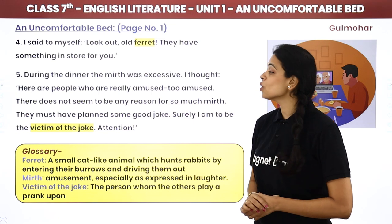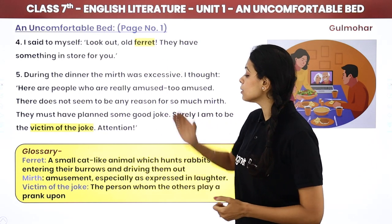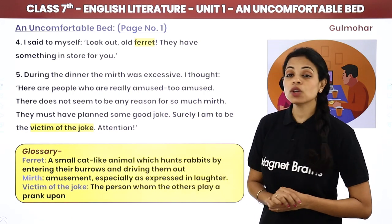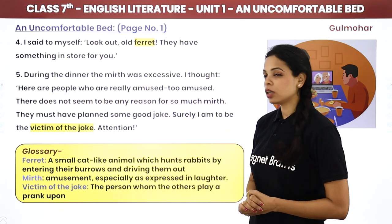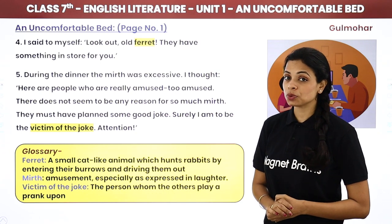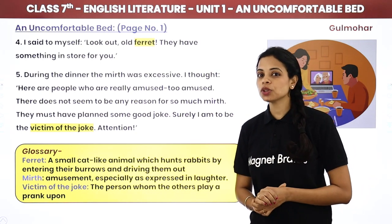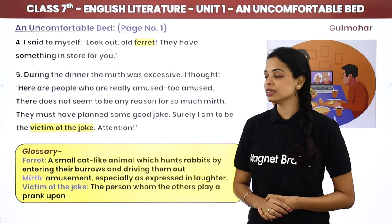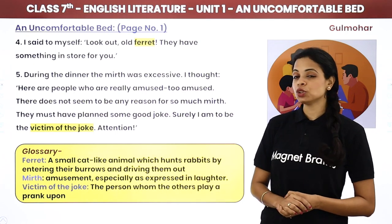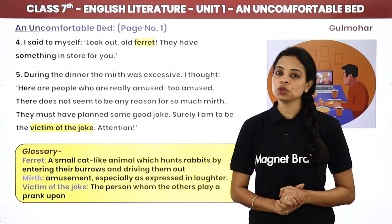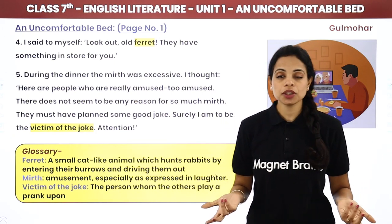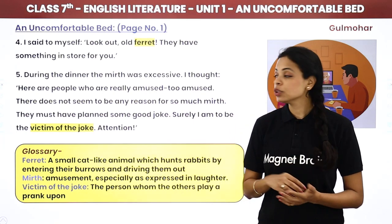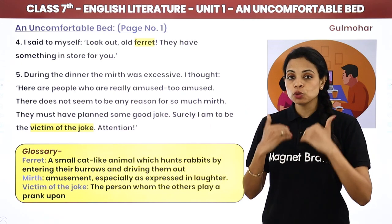During the dinner, the mirth was excessive. 'Mirth' means amusement, especially as expressed in laughter. Everybody was happy — too happy. I thought, here are people who are really amused — too amused. There does not seem to be any reason for so much mirth. They must have planned some good joke. Surely I am to be the victim of the joke. He thought: these people are definitely planning something — otherwise there's no reason for such excessive happiness. I am going to be their target.